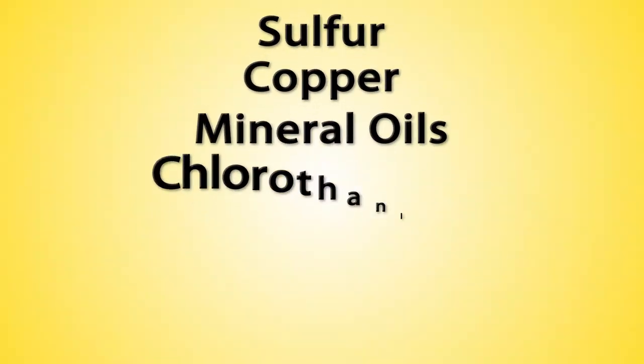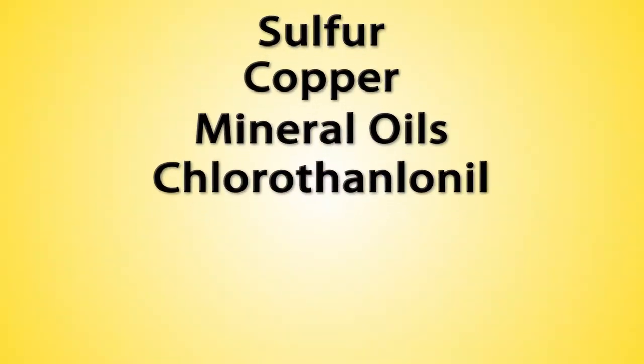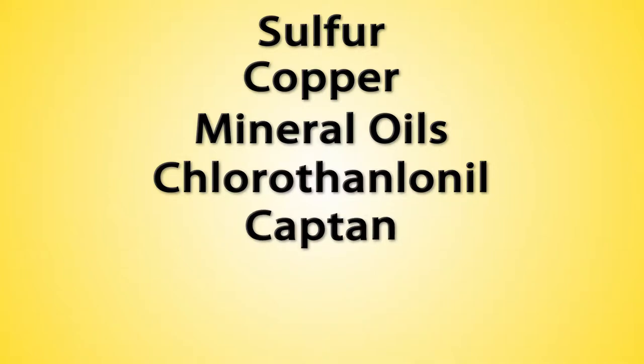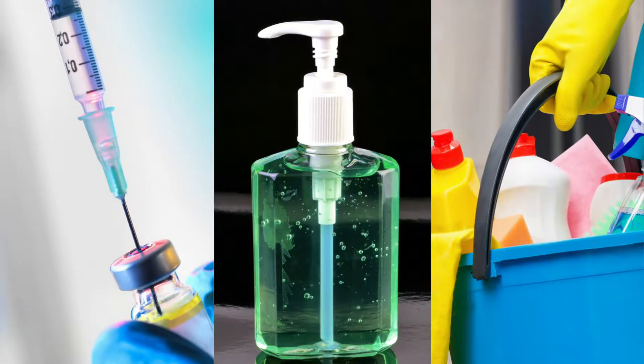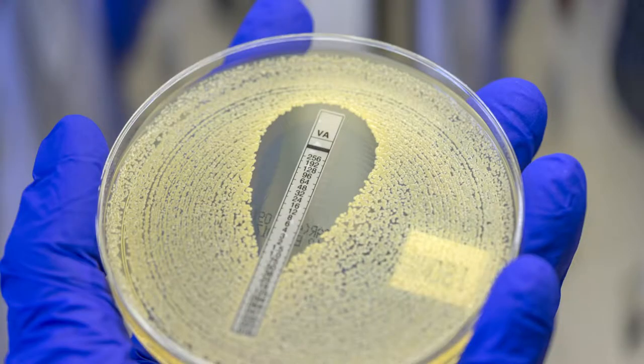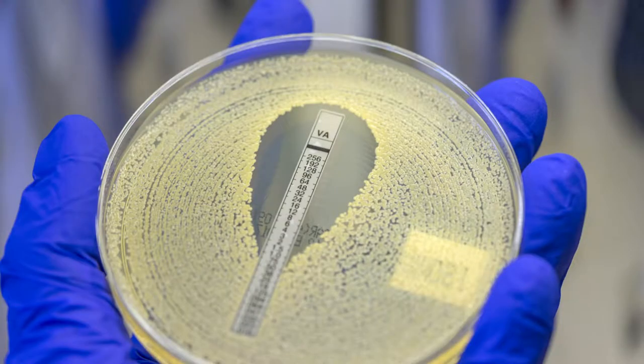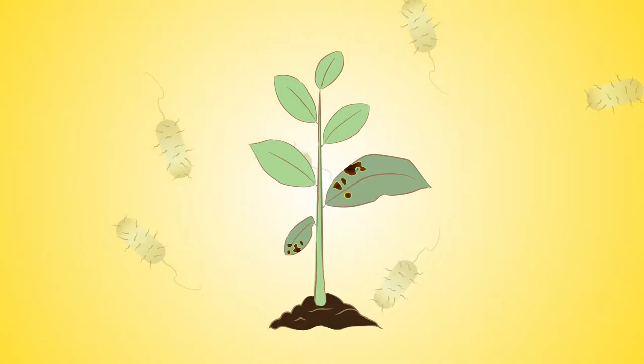Some of the most recognizable chemicals in these categories are sulfur, copper, mineral oils, chlorothalonil, captan, carbamates, and polypeptides. Bactericides and antibiotics are widely found in all life forms and are needed to control harmful bacteria.